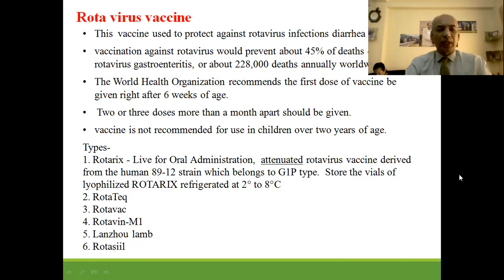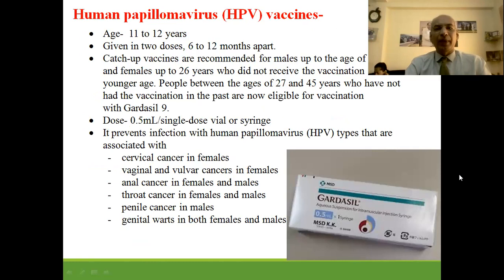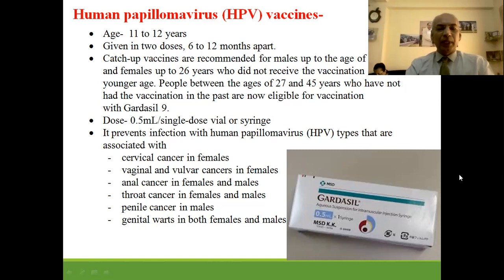HPV (human papillomavirus) vaccine is given to girls at age 11 to 12 years, 2 doses 6 to 12 months apart, 0.5 ml in a pre-filled syringe. It protects against cervical cancer in females, vaginal and vulvar cancer in females, anal cancer in both males and females, throat cancer in both, penile cancer in males, and genital warts in both males and females.